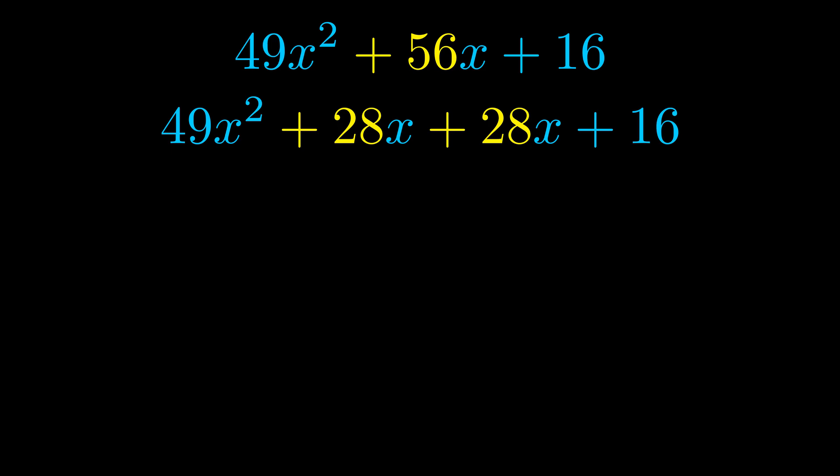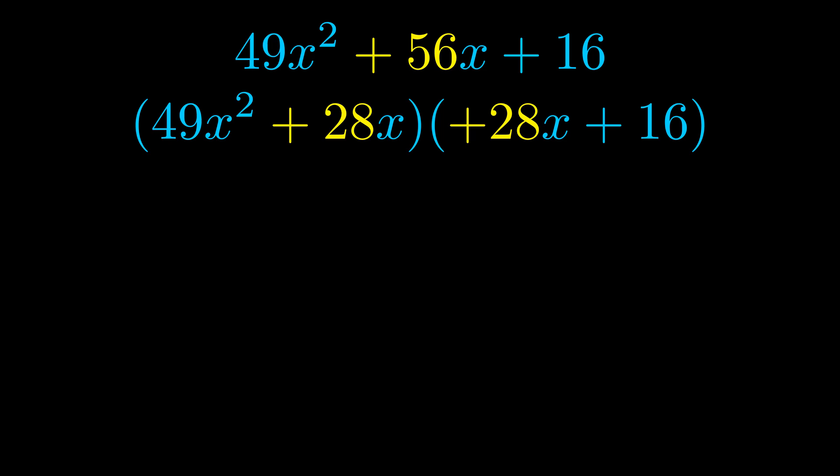Once we've done this we go ahead and we put parentheses around the first term and the last term. And we do that so that we can take the greatest common factor out of both terms. We can see the greatest common factor is now outside in green.